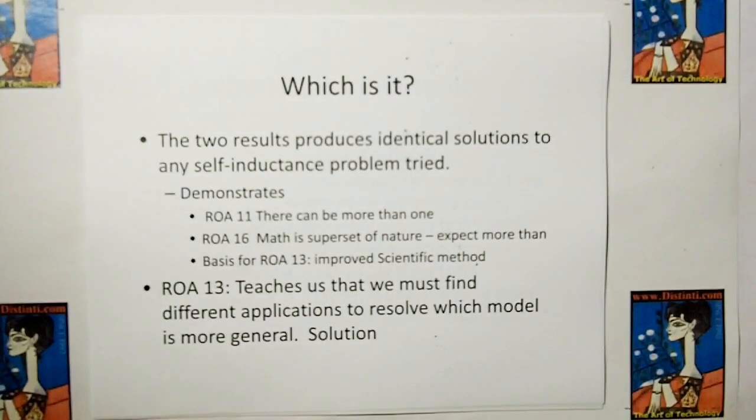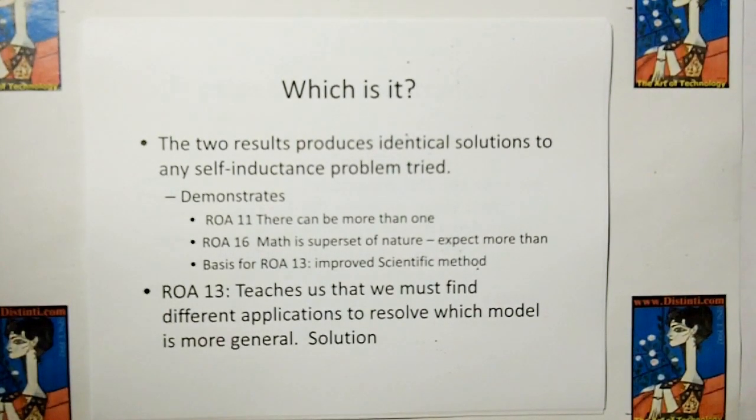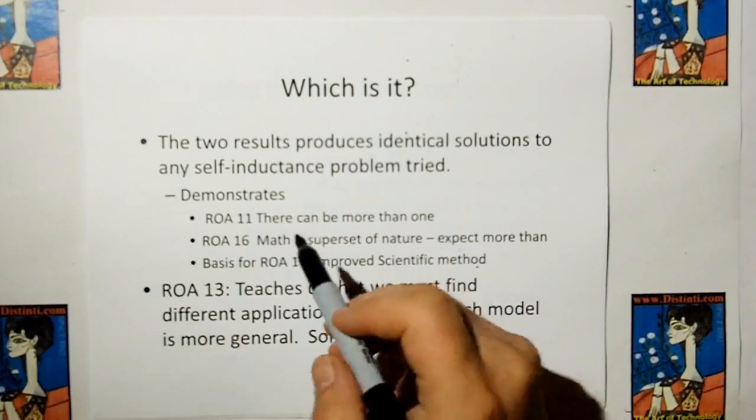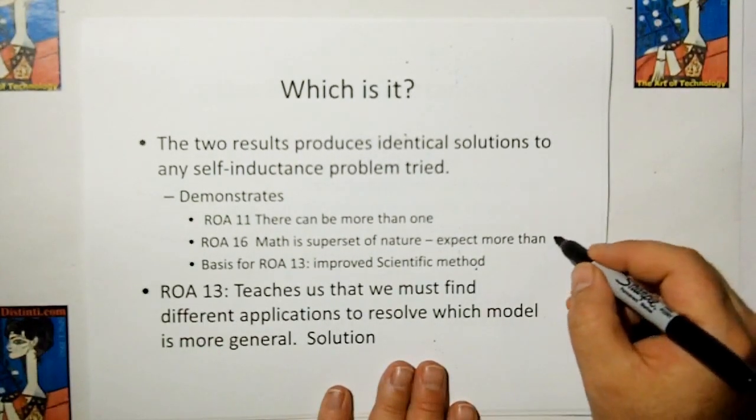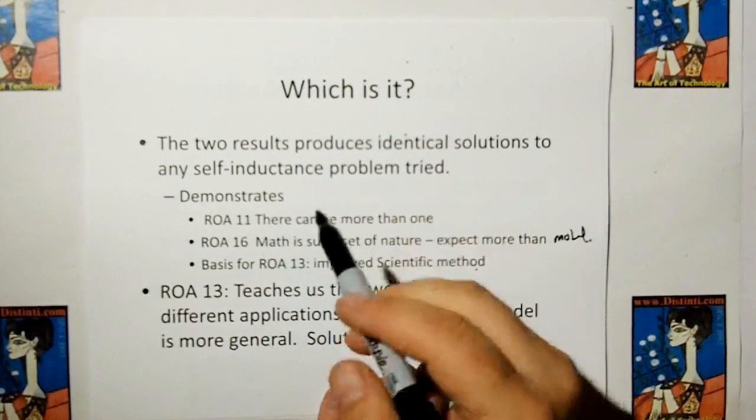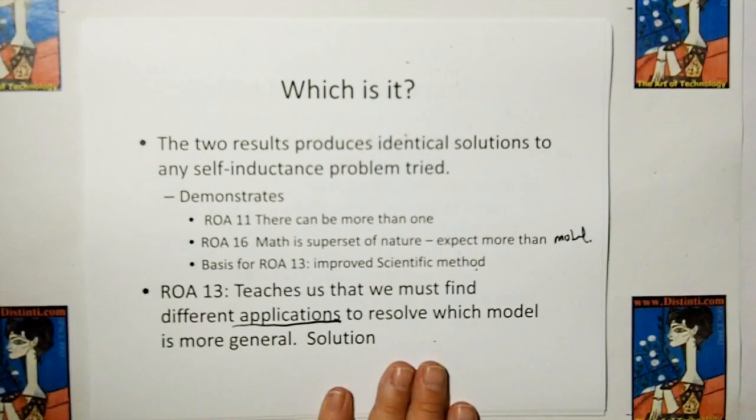So which is it? The two results produce identical solutions to any self-inductance problem that I tried, and I tried for a long time to figure out, try different experiments to separate. I couldn't get any one to be any better than the other for any different solution. But then we go back to the rule of acquisition 11, and we realize there can be more than one model. And rule of acquisition number 16 says that math is a superset of nature, so we should expect more than one model to fit the experimental results. And the basis for the rule of acquisition 13, the proof scientific method, we have to find a different application, not just a self-inductance application, to resolve which model is more general.